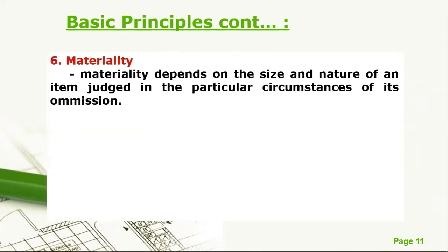The next principle is materiality. Materiality depends on the size and nature of an item judged in particular circumstances. For example, 10 cans of sardines lost by a small sari-sari store is material because it is a significant loss for a small business. However, 10 cans of sardines lost by a large department store may not be material, because the size of that business is very large.